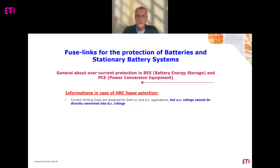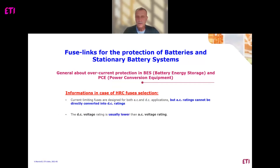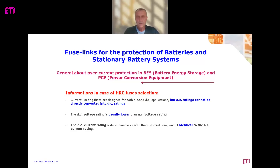There is some important information regarding high rupturing current fuse selection. Usually, current limiting fuses are designed for both DC and AC voltages, but AC ratings cannot be directly converted into DC ratings. This means that the AC voltage rating of a fuse is not comparable with the DC voltage rating of the same fuse — DC voltage is usually lower than AC voltage. Regarding current, the DC rated current is usually identical to the AC current of the same fuse, so there are no changes there.